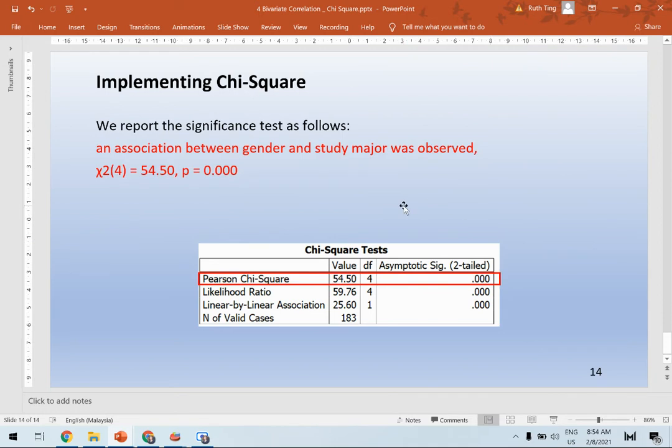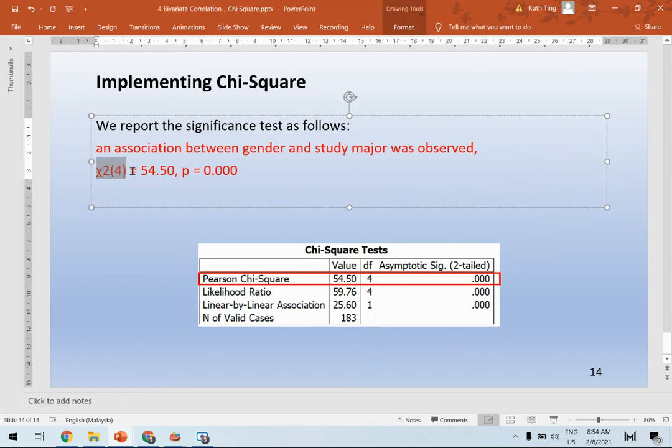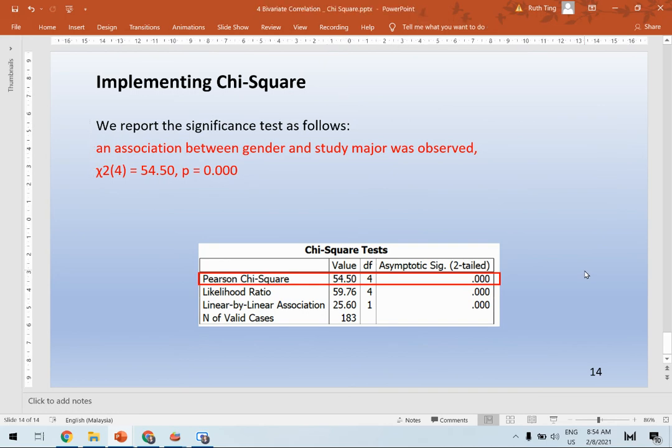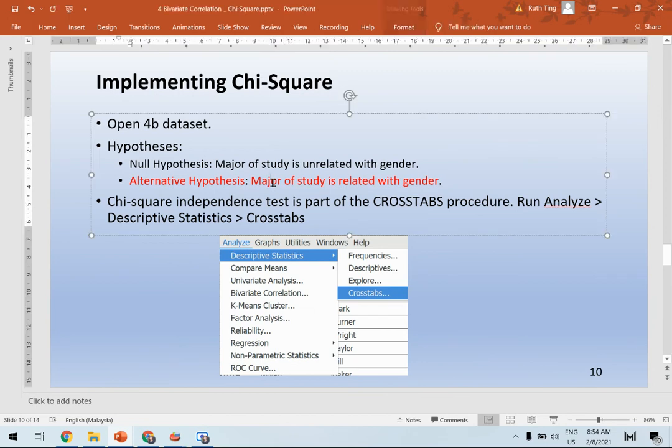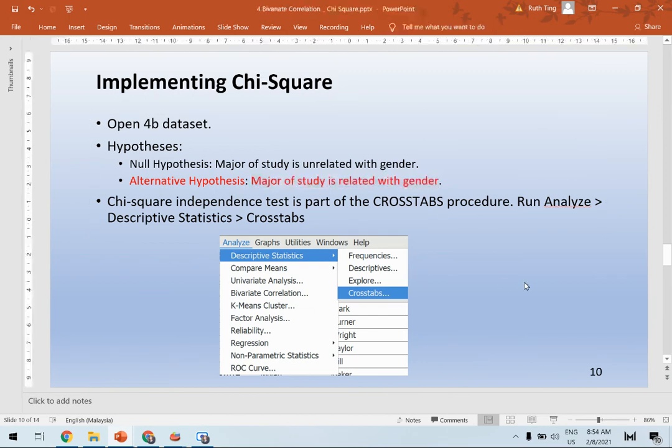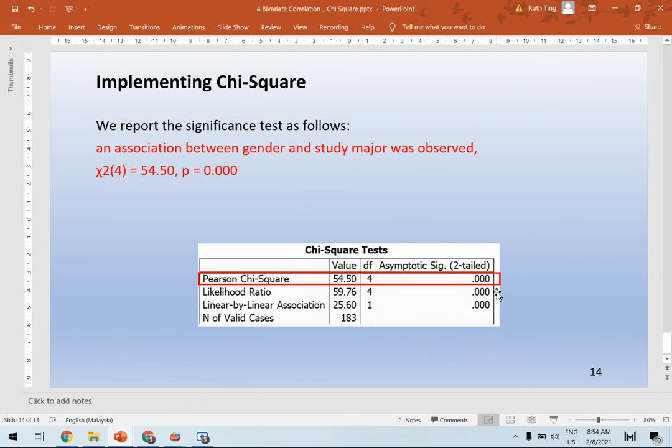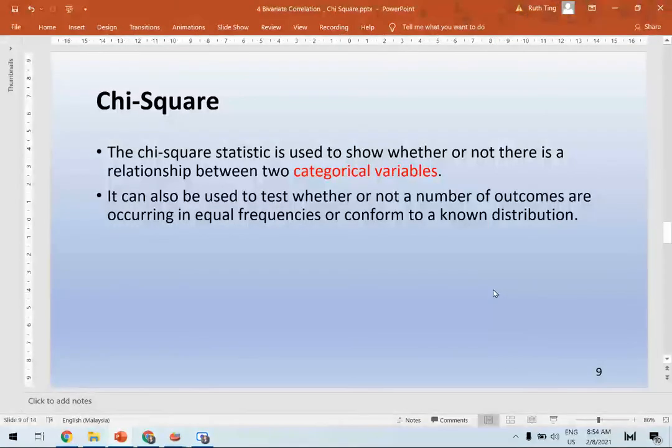We can further report the significance test as follows: an association between gender and major of study was observed, and the formula is this. This is taken from here: 54.5, and the p is less than, it's actually equal to 0.000. So you can accept your alternative hypothesis, which is major of study is related with gender. That's how easy you can implement chi-square if you have two categorical variables.